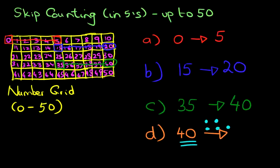So we've got 40, 41, 42, 43, 44. Therefore, the last one is 45. Therefore, the number after 40, if we are counting in fives, is 45.